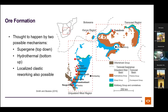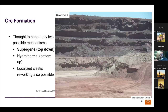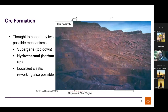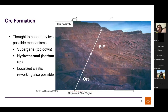Clastic reworking of high-grade ores can also produce interesting conglomerate ores. At Kolomela Mine south of the Maramani Dome, high-grade ores sitting above oxidized iron formation suggest a supergene top-down process. At Tabazimbi, high-grade ores sitting below oxidized iron formation suggest a hydrothermal or hypergene process.